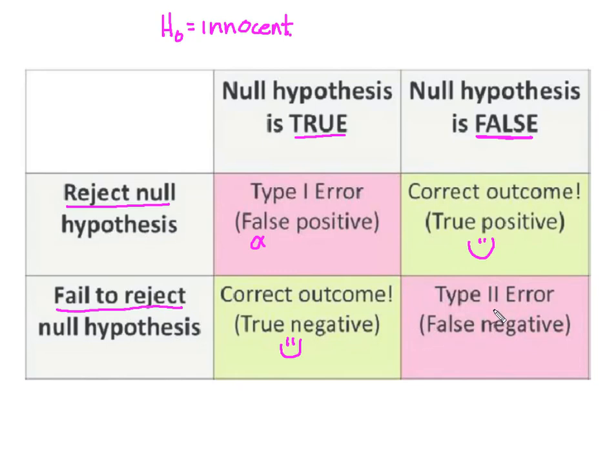That's a false negative and a Type II error. Remember, that's designated by the Greek letter beta. So in the case where the accused is actually not innocent and we fail to reject innocence, then that's our Type II error.